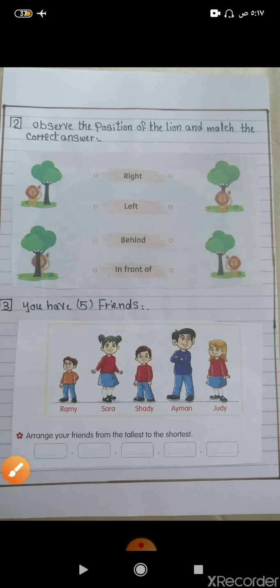Question number three. You have five friends. Arrange your friends from the tallest to the shortest. I have Romy, Sara, Shady, Ayman, and Jody.